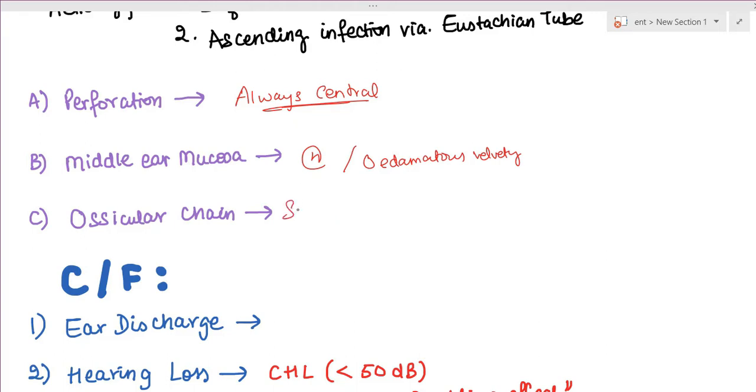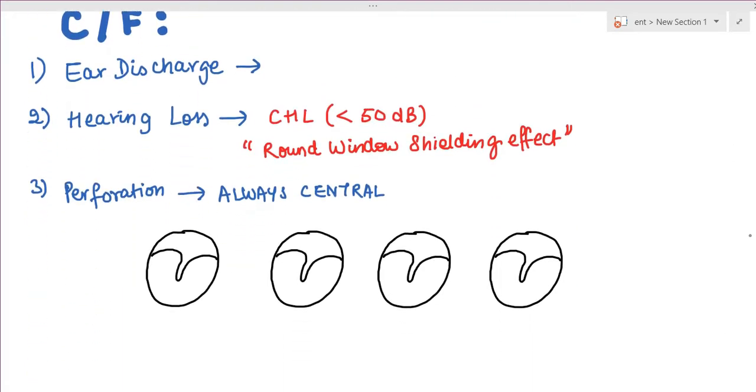The clinical features of safe CSOM include ear discharge that is non-offensive, not foul-smelling, and mucoid or mucopurulent in nature. Hearing loss is conductive and usually not more than 50 decibels.